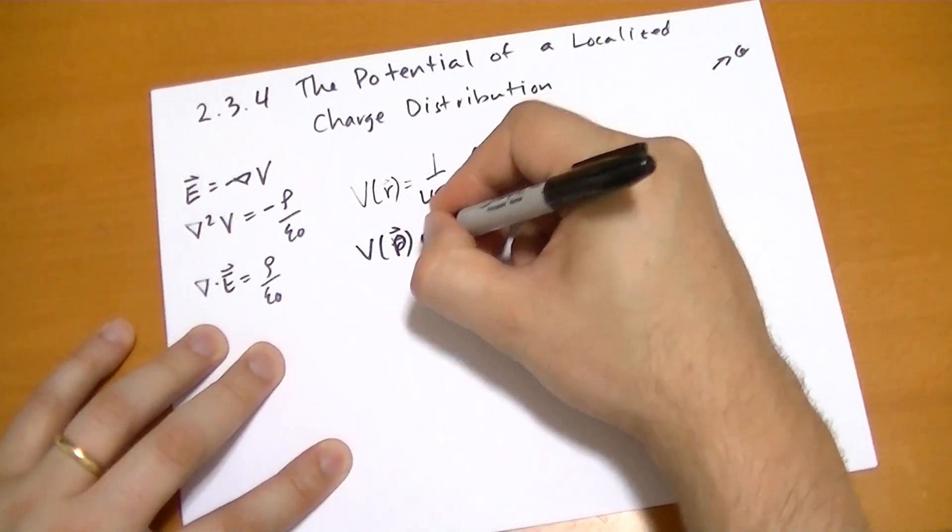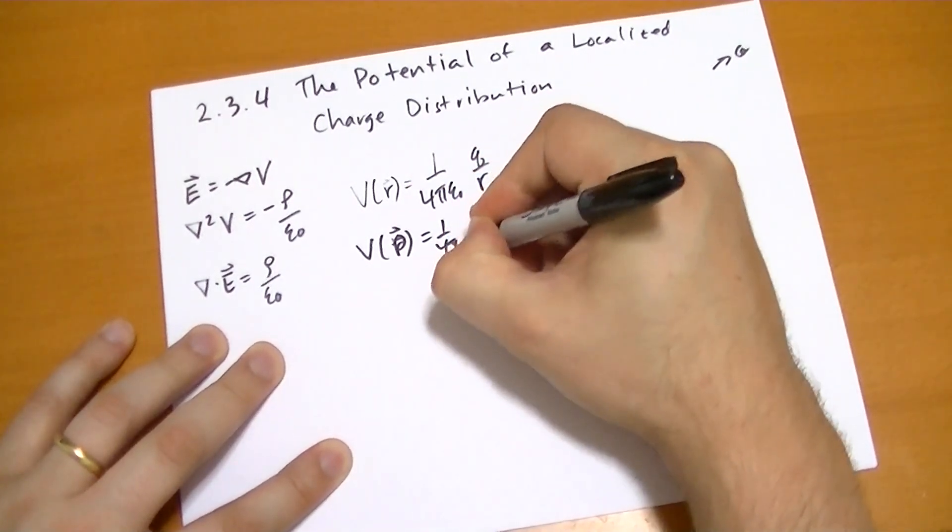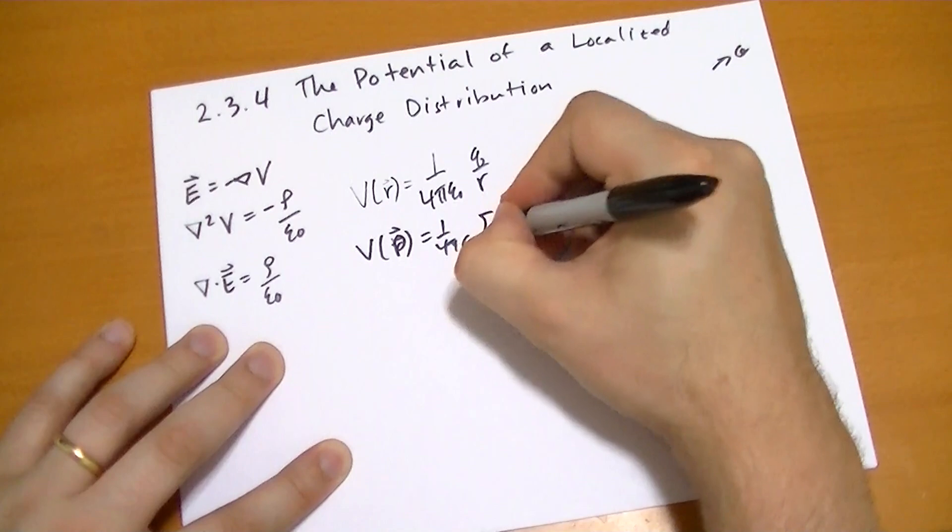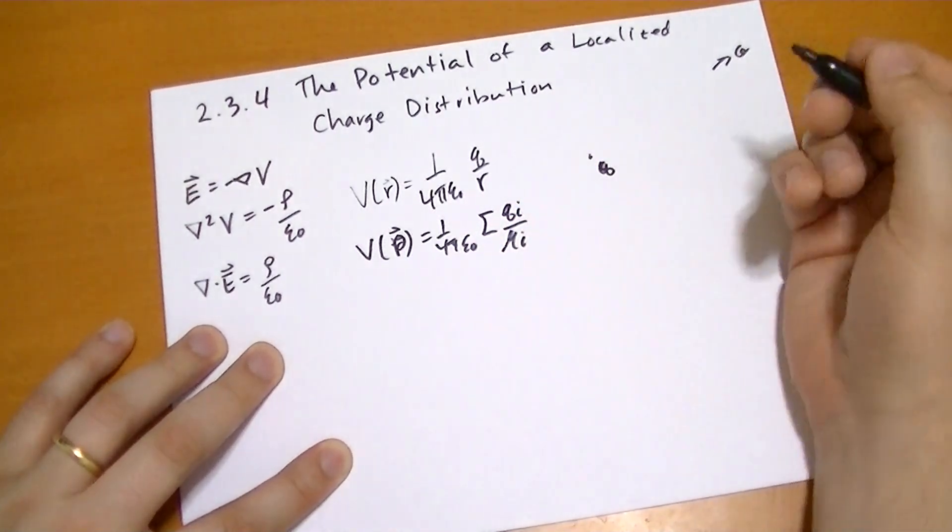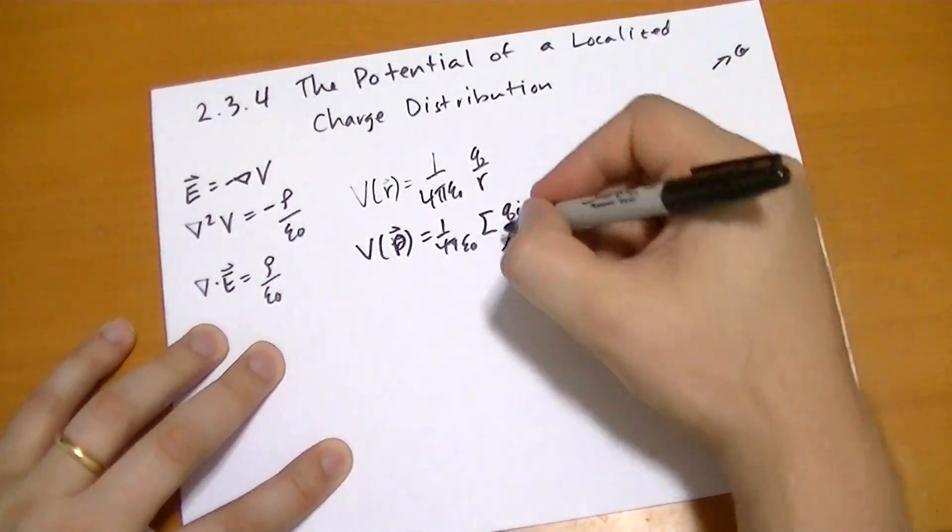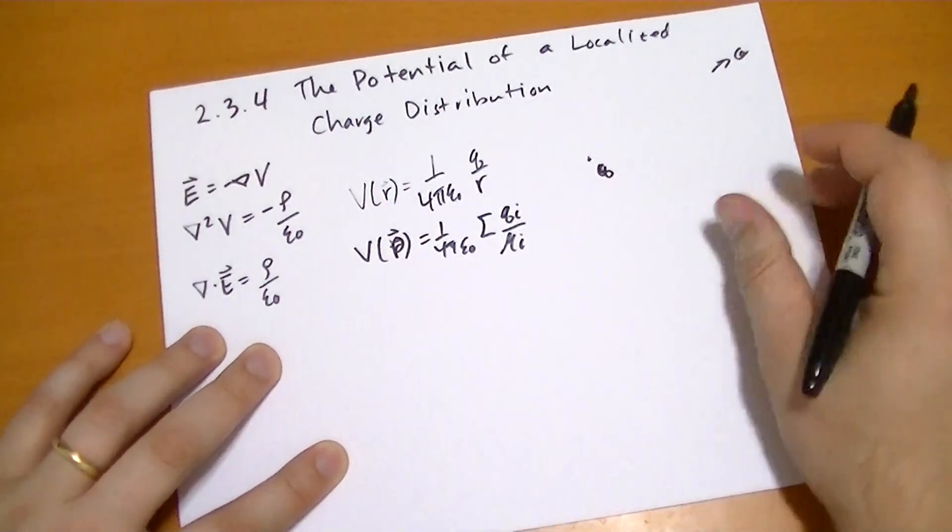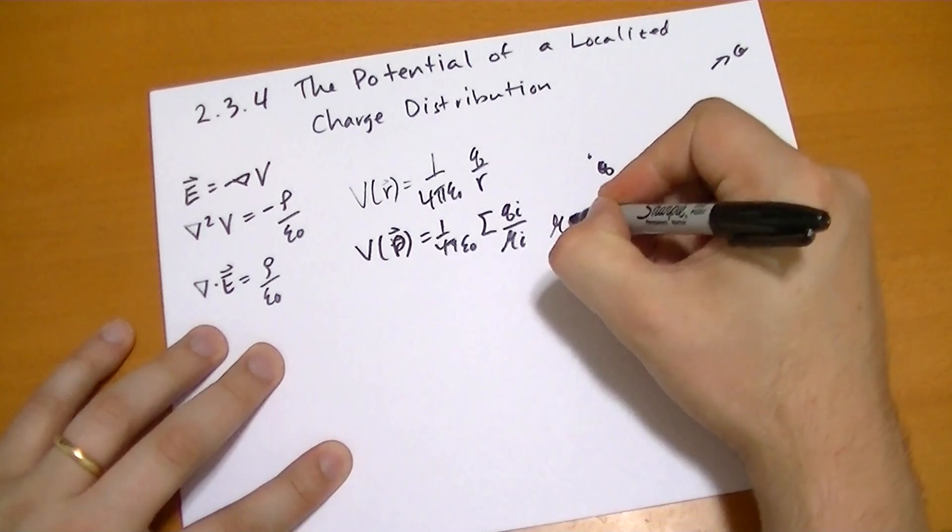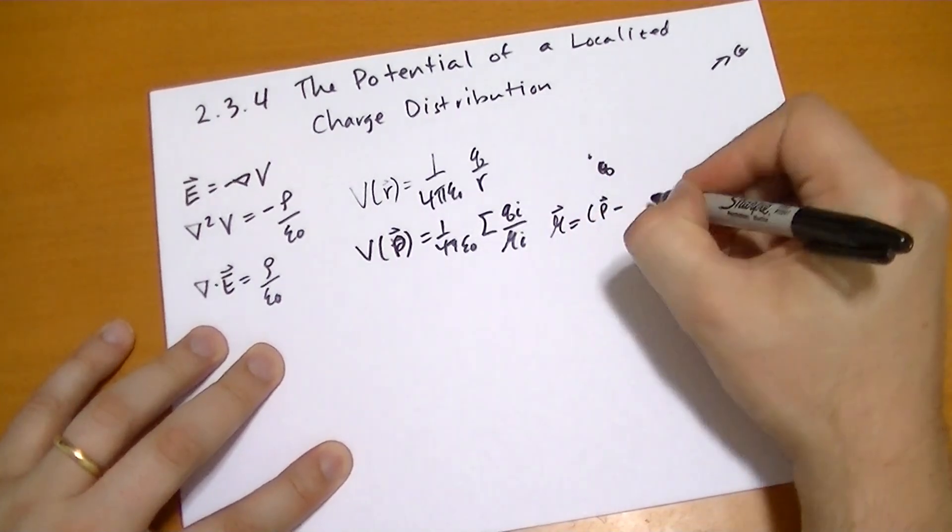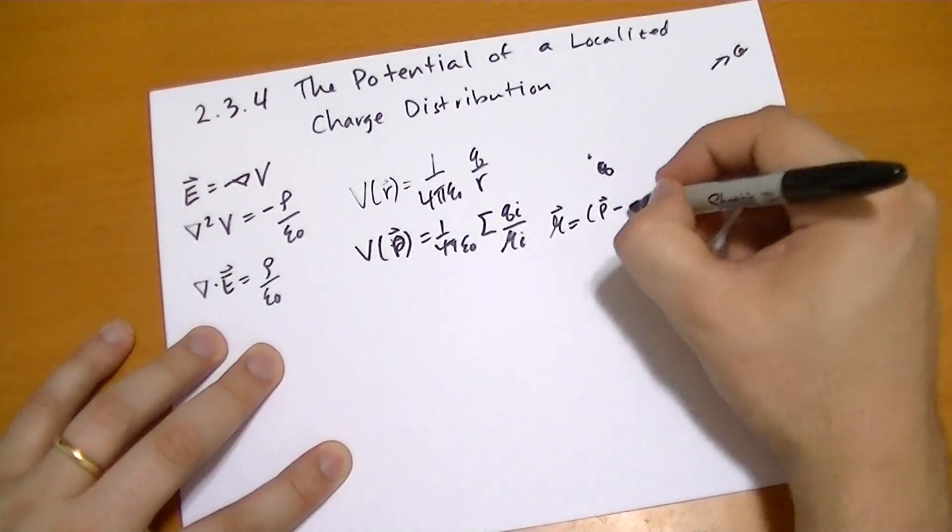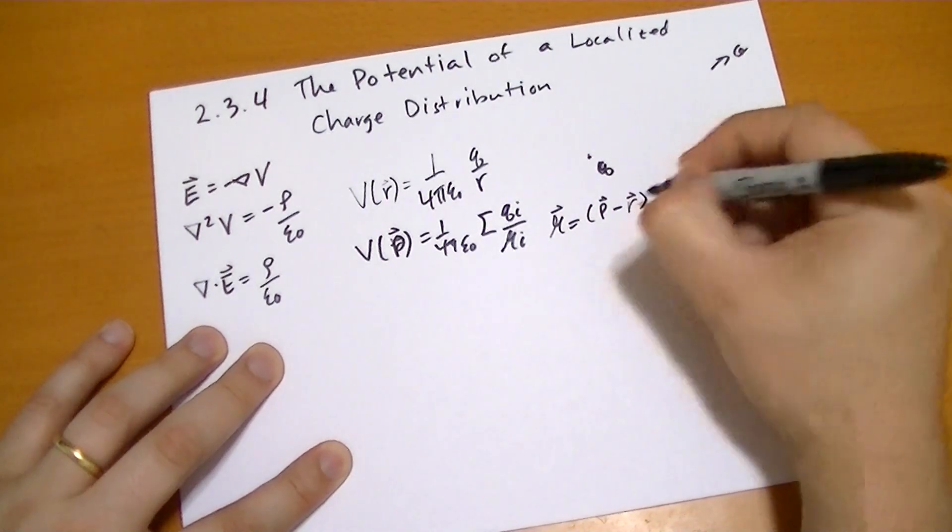P vector is equal to 1 over 4 pi epsilon naught, and the sum of all the charges and the length of the distance between whatever point we're interested in where the charge is, where R is defined as P vector minus the position of that charge.